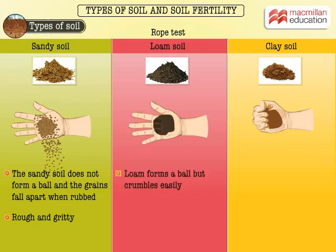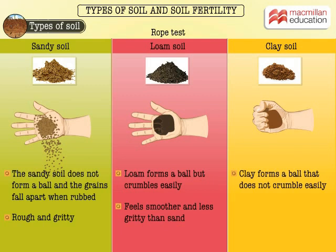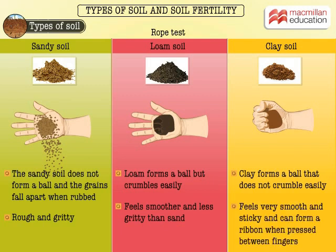Loam forms a ball but crumbles easily. It feels smoother and less gritty than sand. Clay forms a ball that does not crumble easily. It feels very smooth and sticky and can form a ribbon when pressed between fingers.